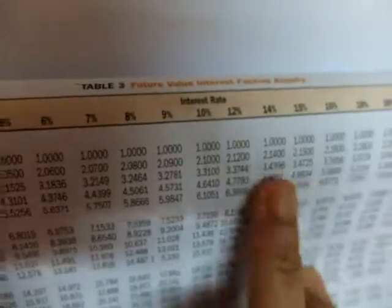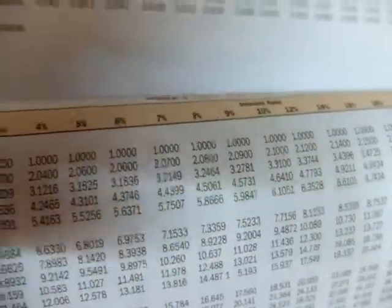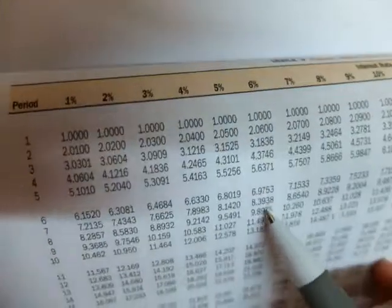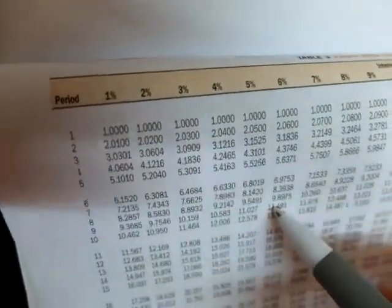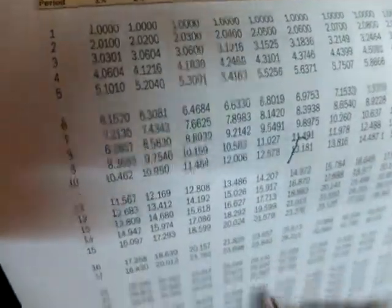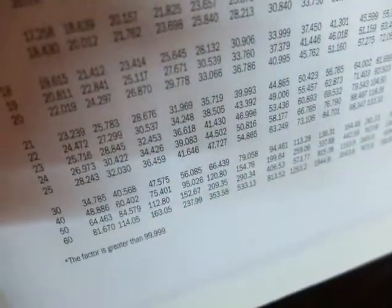Your future is... You look at future value interest factor for an annuity, 6% and then 30 years. You go down, 30 years is 79.